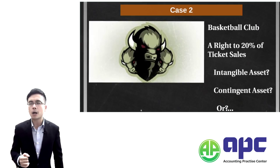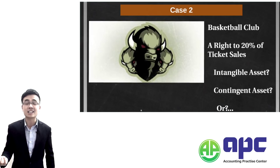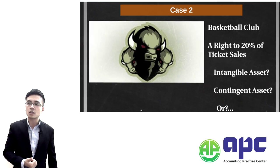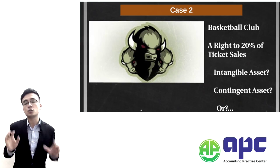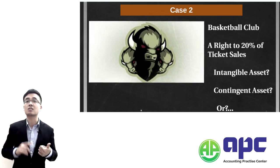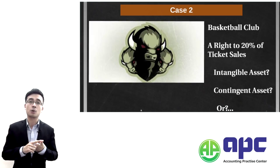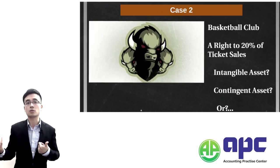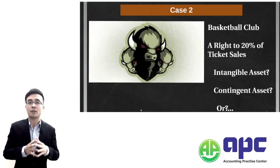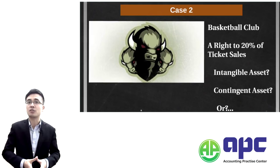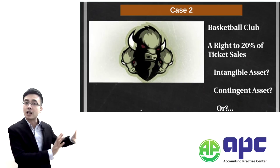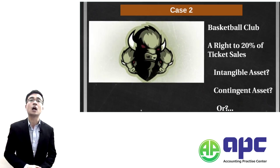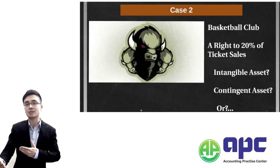Perhaps you should refer to IAS 37 — Provisions, Contingent Liabilities or Contingent Assets. To put it simply, for a provision it's a liability — for example, you estimate you will pay $300 tomorrow, so you provide for a provision now by debiting the expense and crediting provision worth $300. We also have contingent liability, normally in a court case.